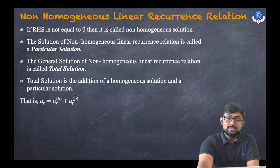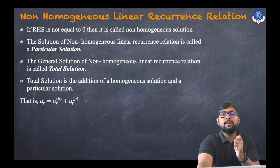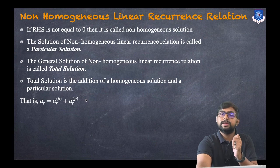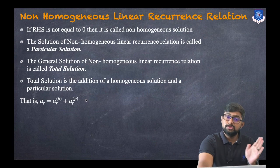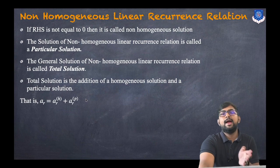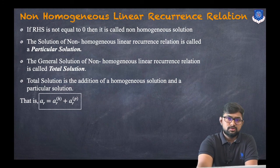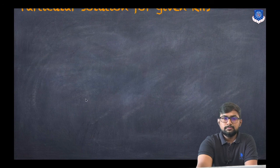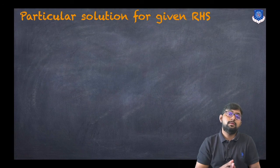So that is: a(r) equals a(r)_h plus a(r)_p — that is, homogeneous solution plus particular solution — which is called a total solution. This will be the general solution. Now, the choice of particular solution depends on the given right-hand side.